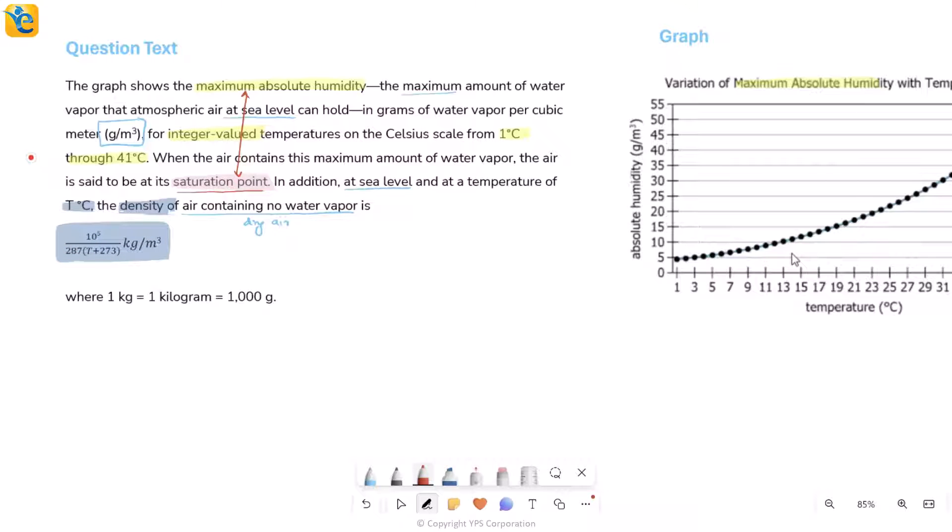Because it's dry air, this weight that I have, these kilograms, this is not for water vapor. This is for air itself and its weight per meter cube. Essentially, this means its weight of one meter cube of dry air at different temperatures. As temperature changes, this density will also change.